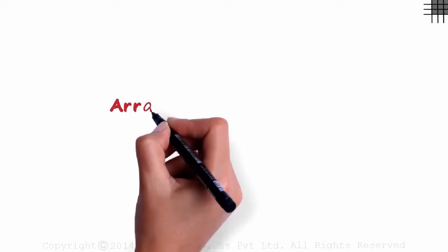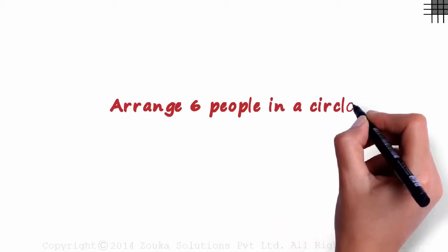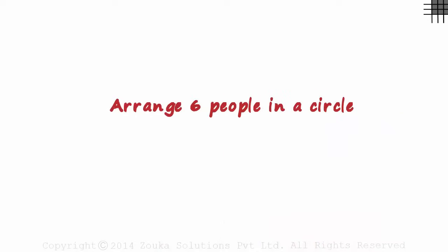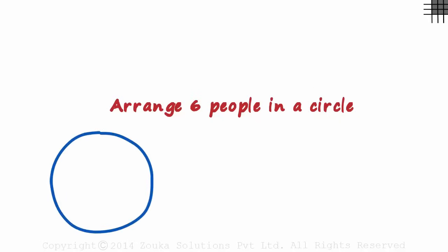In how many ways can we arrange six people in a circle? We have seen problems in which we have arranged people in a row. But this time, we have to arrange them in a circular fashion. Six people will be seated like this. In how many ways can we arrange six people around this circle?